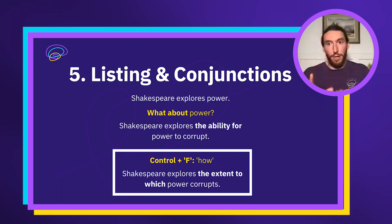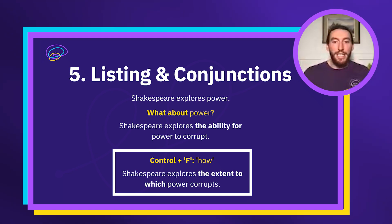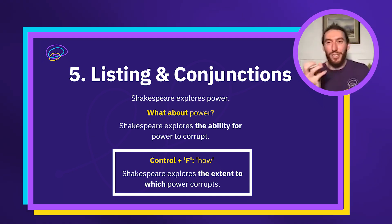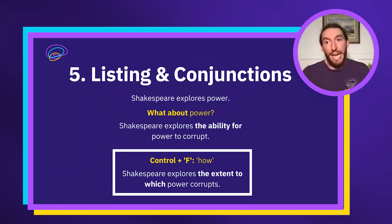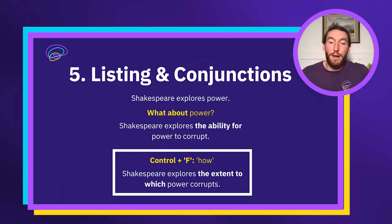I could speak about this for the whole time, but there are little tricks where we can get rid of 'how.' Instead, say 'the extent to which' or 'the level to which.' So: 'Shakespeare explores the extent to which power corrupts' — that's more sophisticated. Notice this doesn't rely on vocabulary; it's just about interchanging the word 'how' for a phrase like 'the extent to which' or 'the level to which.'